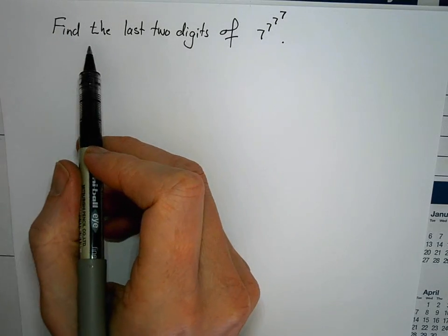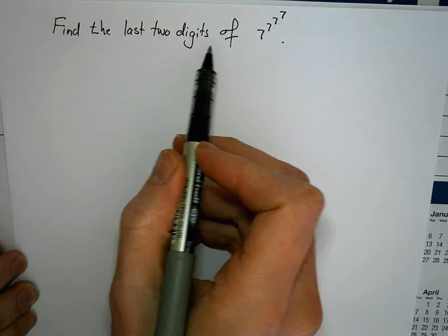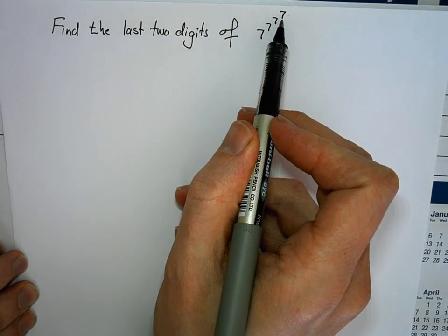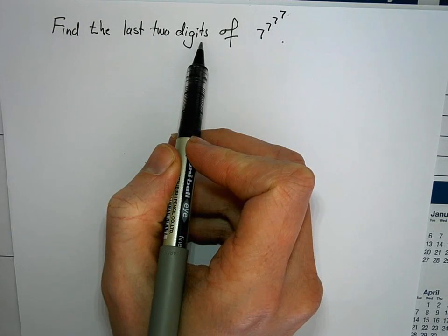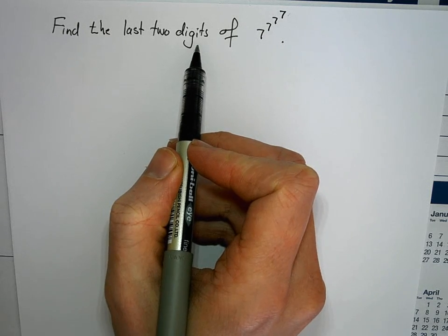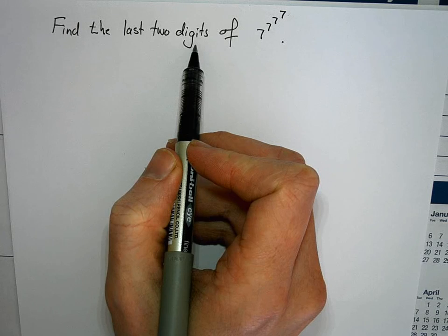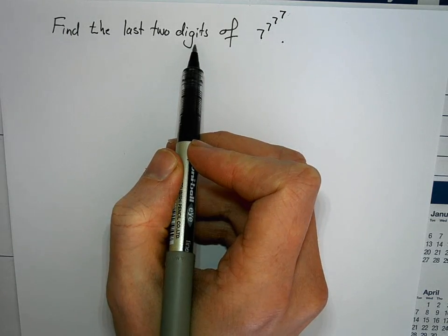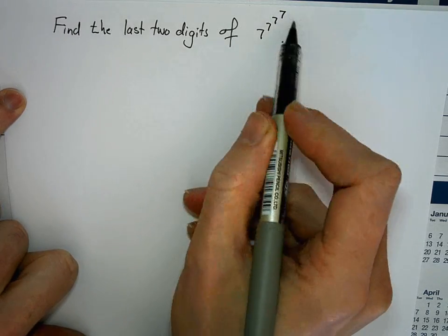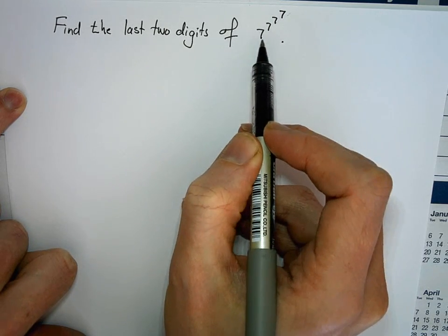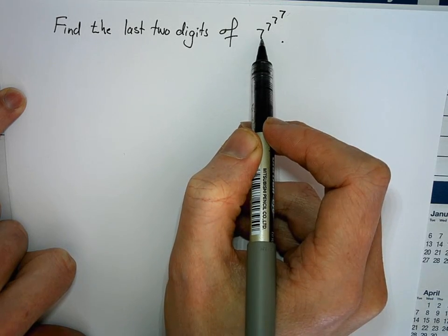In this example we are asked to find the last two digits of 7 to the power of 7 to the power of 7 to the power of 7. The last two digits of any number is basically what remains if you divide by 100. For example, the last two digits of 1004 is 04 — that's the remainder after division by 100. So we want to divide this number by 100 and we're only interested in the remainder.